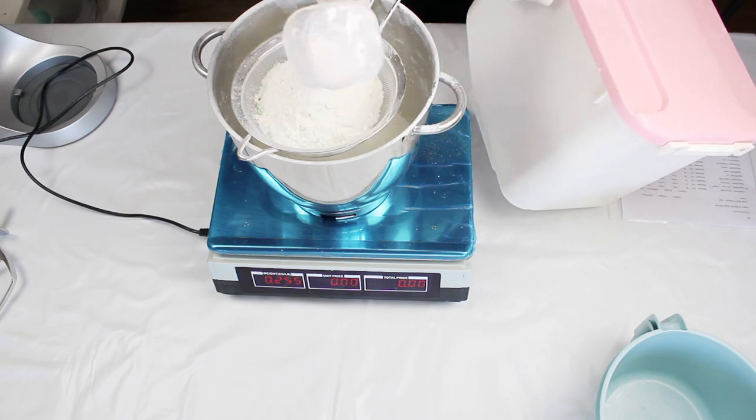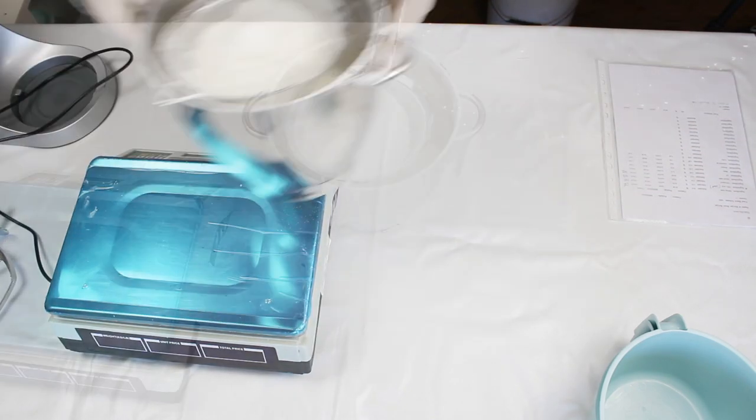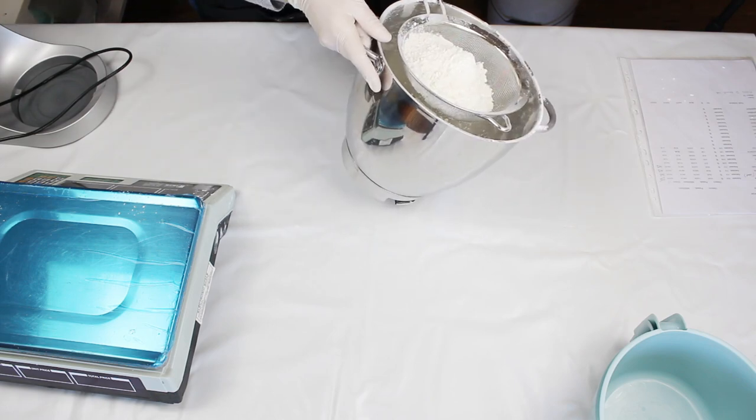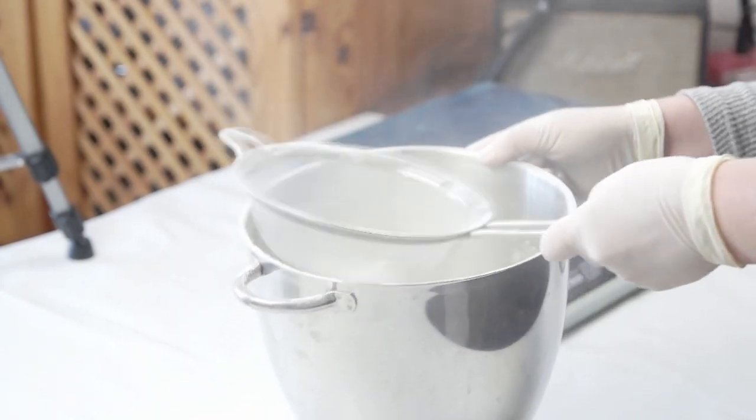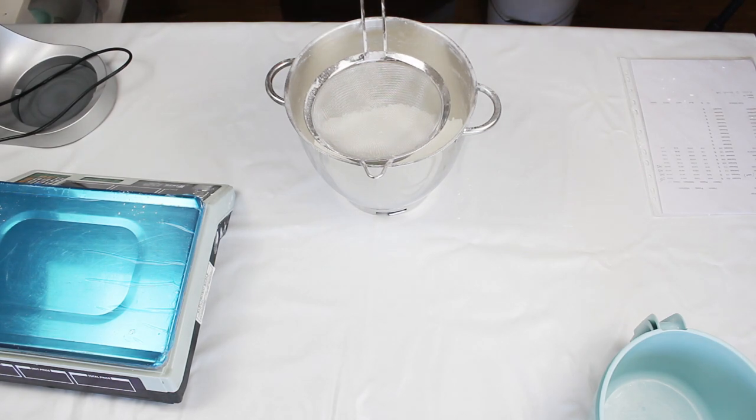I start by measuring the baking soda and for your interest I am going to be leaving my full recipe down in the description below. So once the baking soda is measured I sift it to avoid any clumps and continue adding my ingredients and sifting them.